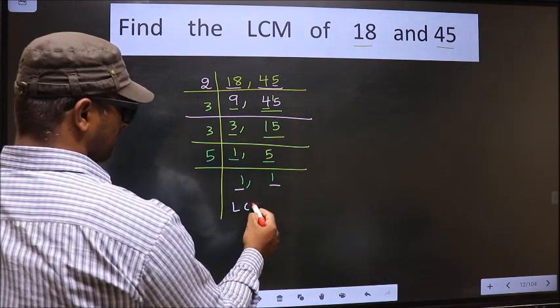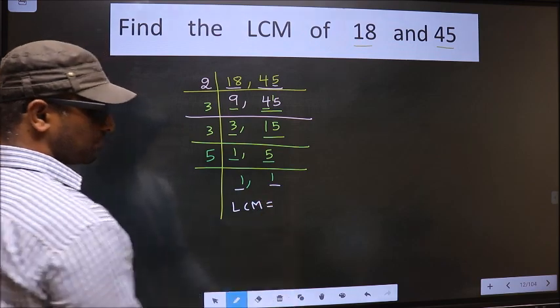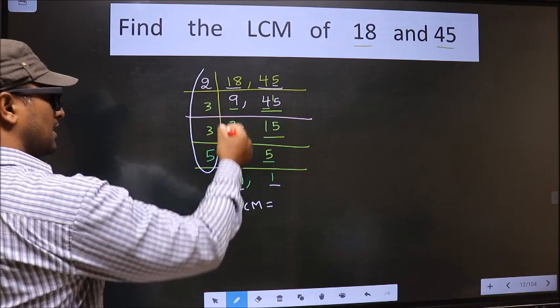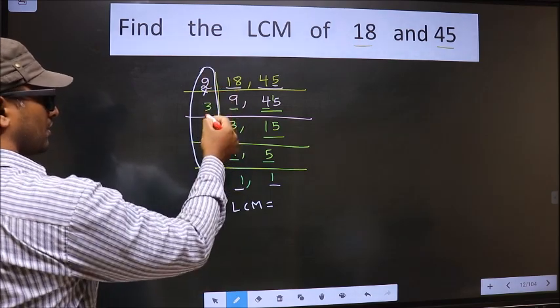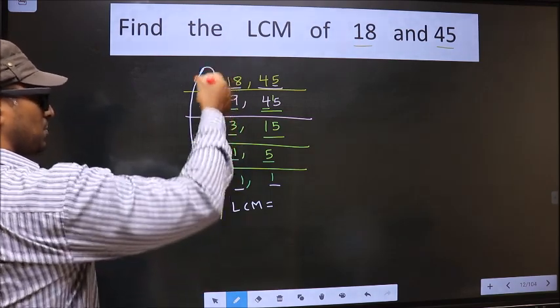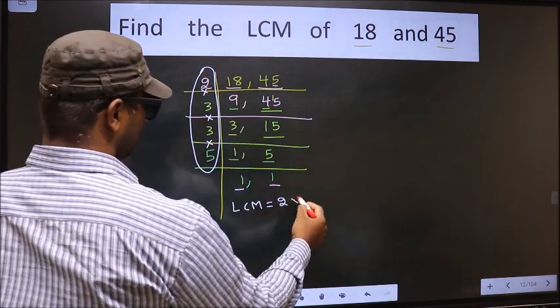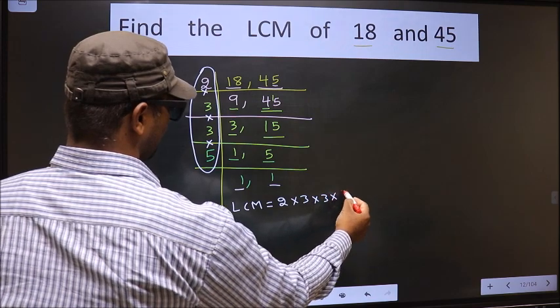So our LCM is the product of these numbers. That is 2 × 3 × 3 × 5.